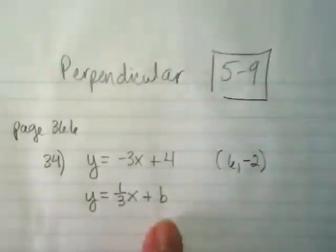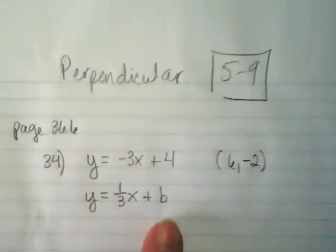So our goal is to discover what this b is and erase it and fill it in with where the second line on the graph would cross the y-intercept.